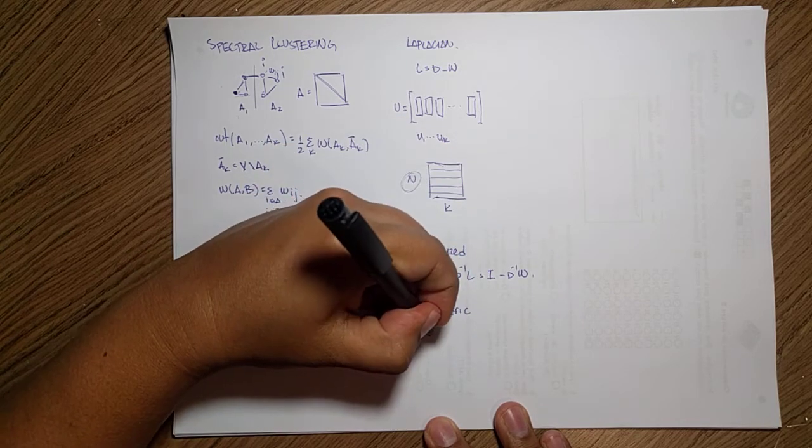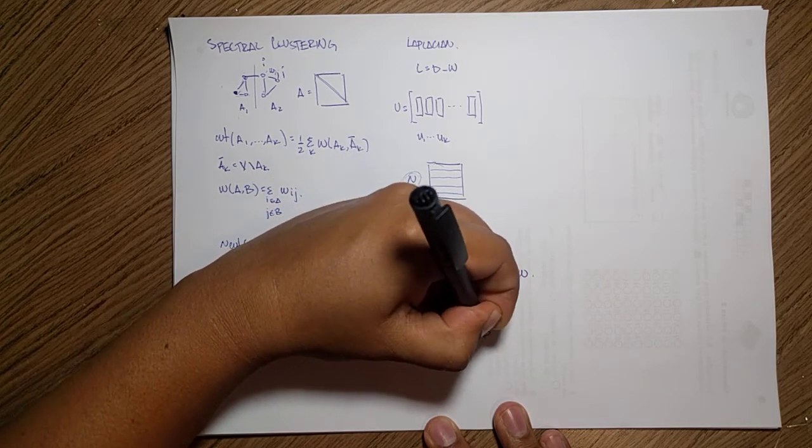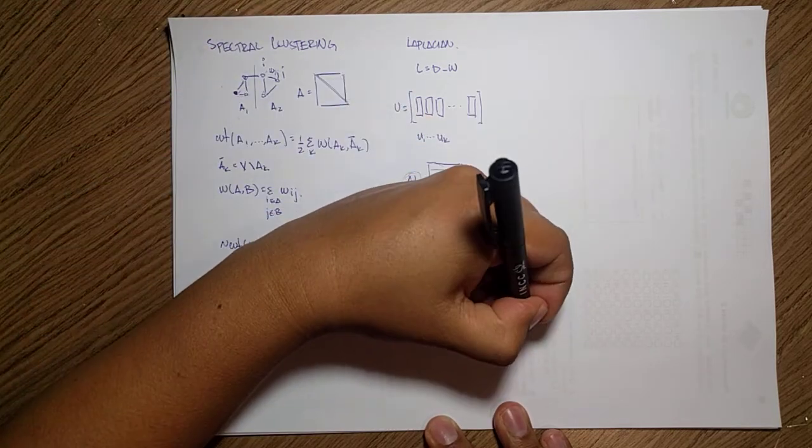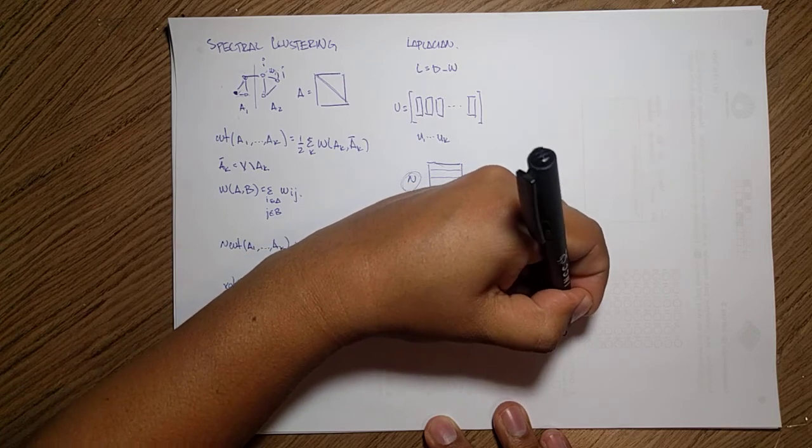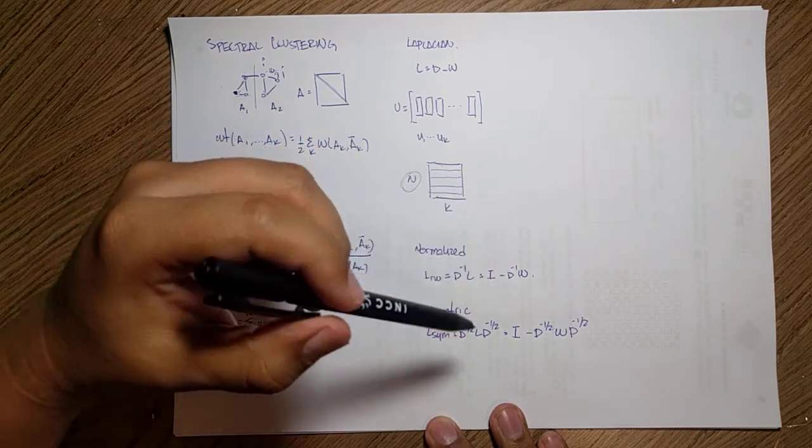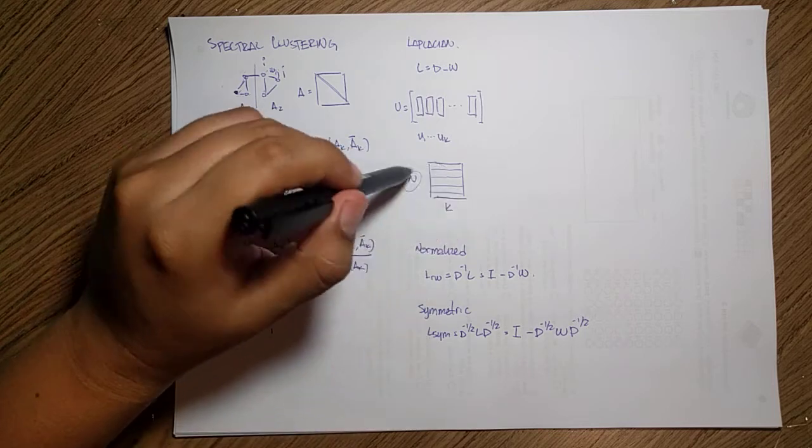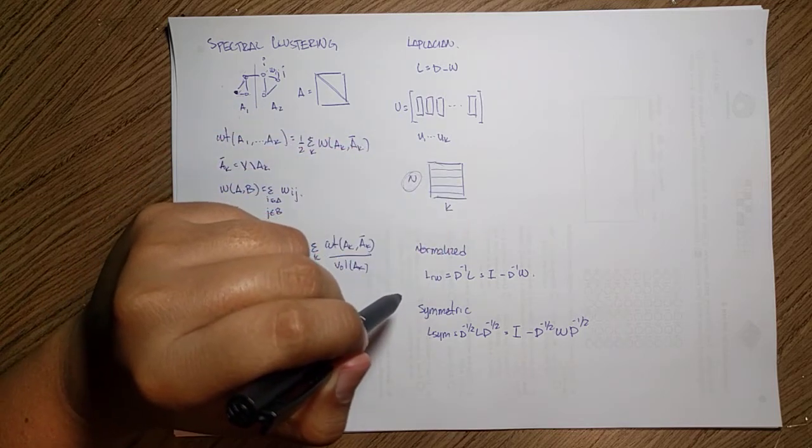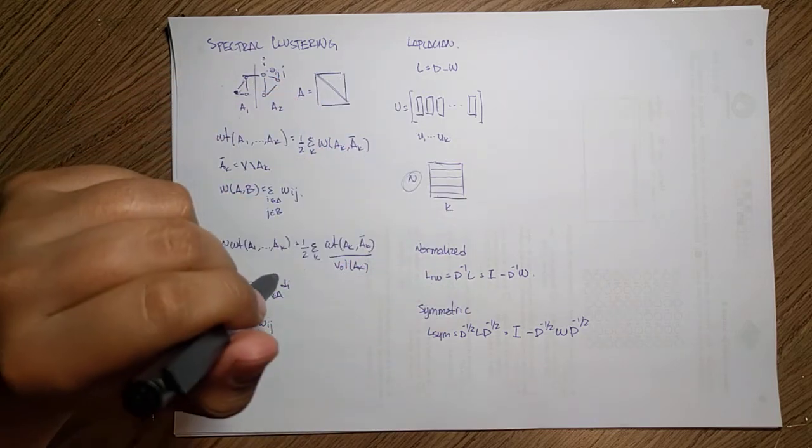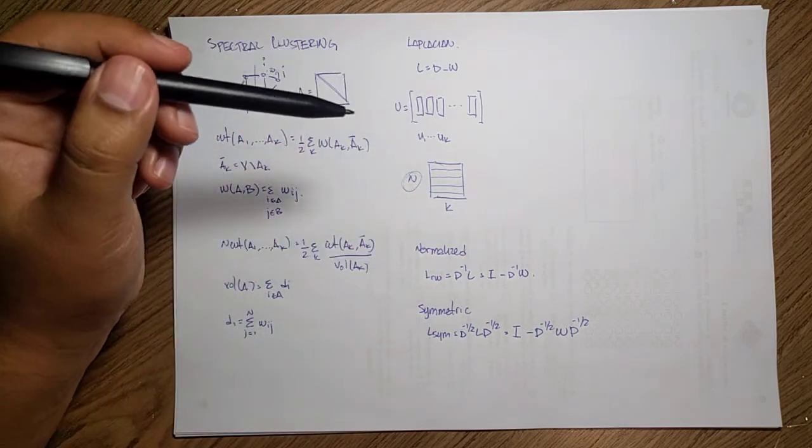In the symmetric version, what you do is that you normalize with respect to this symmetric form of the degree matrix. This is the inverse here. You perform again the same trick: you normalize the rows of the eigenvectors, and this produces really nice and interesting solutions for the different processes here.